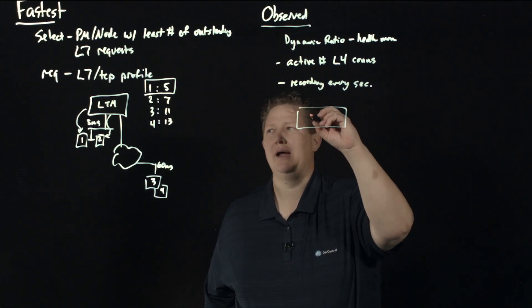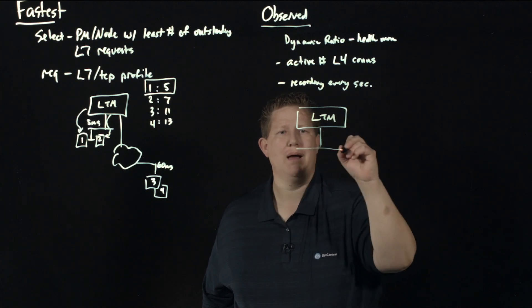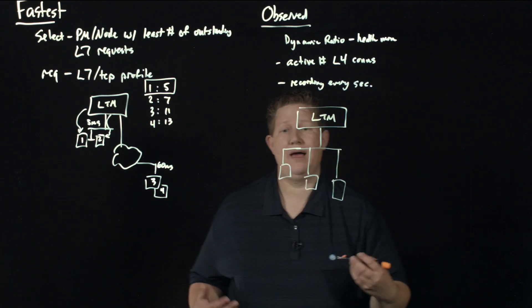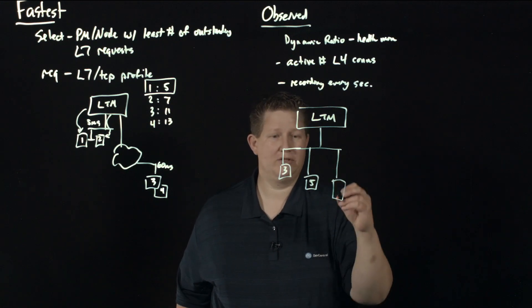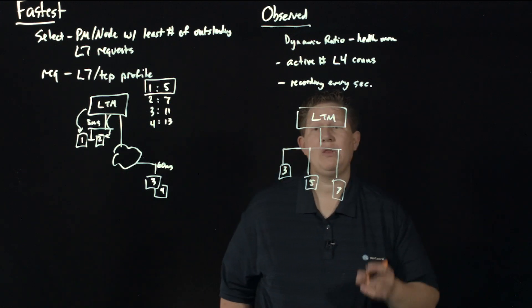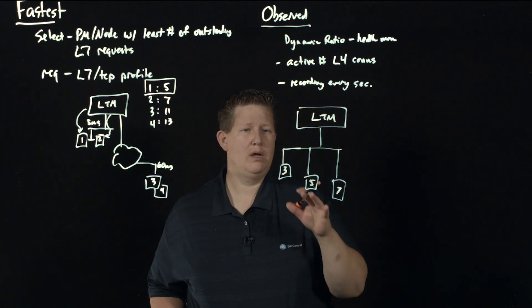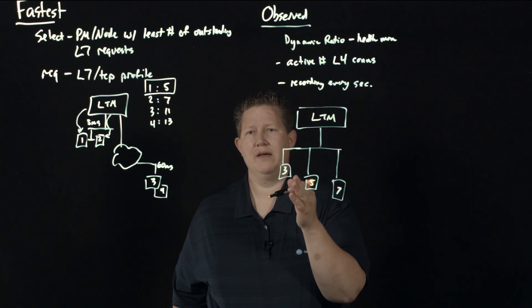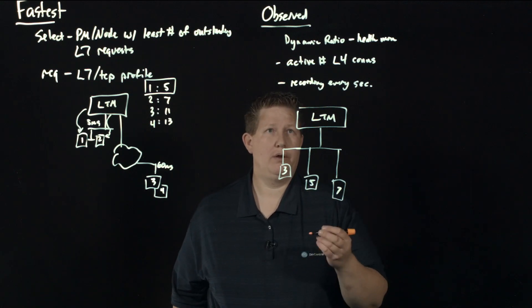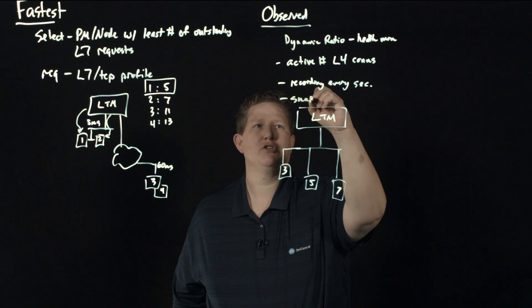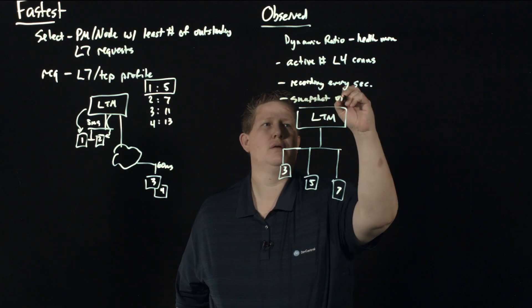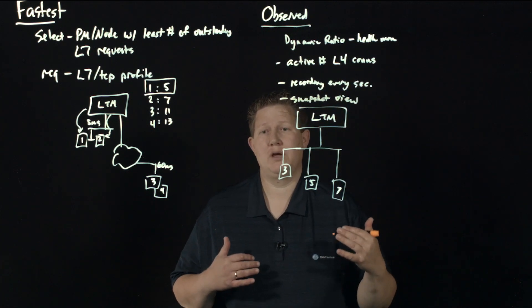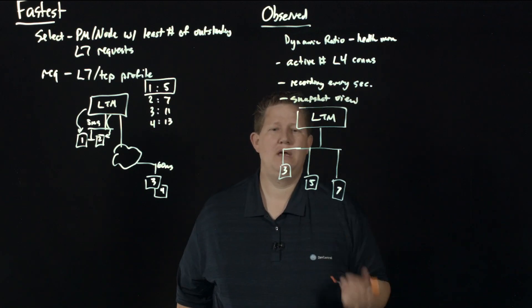If I have a snapshot here of my pool members—say I have three active connections here, five active connections here, and seven active connections here—observed is going to build a ratio for each of these. The ratio is going to be greater for here because it has in this snapshot of time. This is a snapshot view. It looks at active L4 connections every second, so when a new connection comes in it's looking at the last second's data.